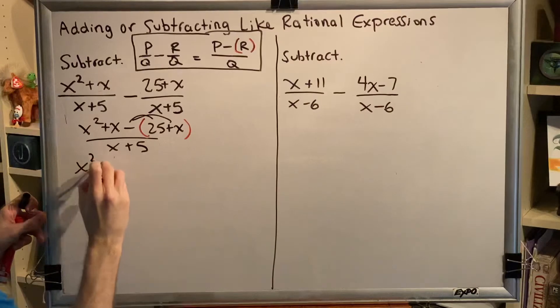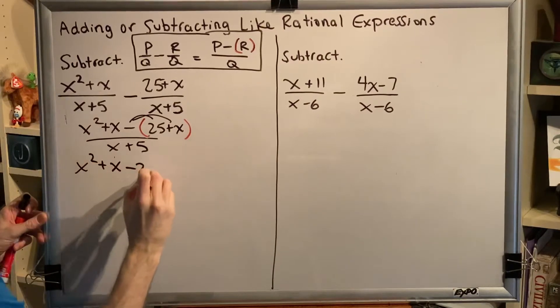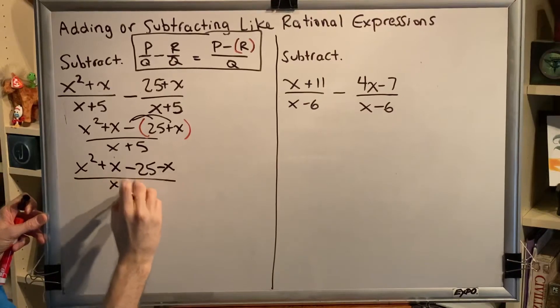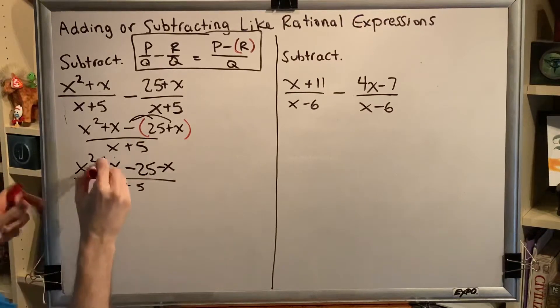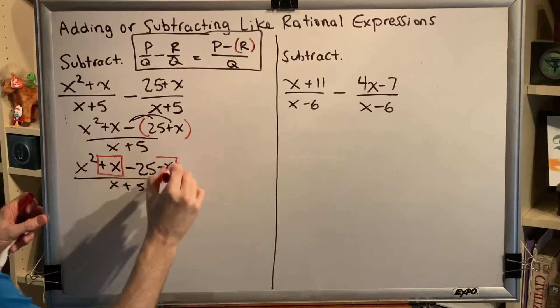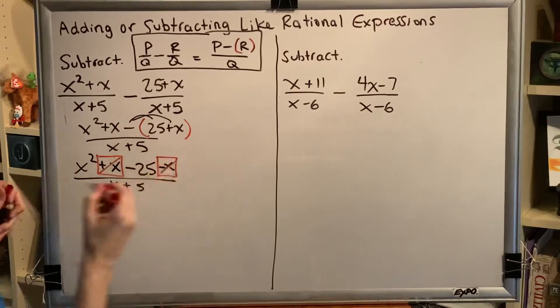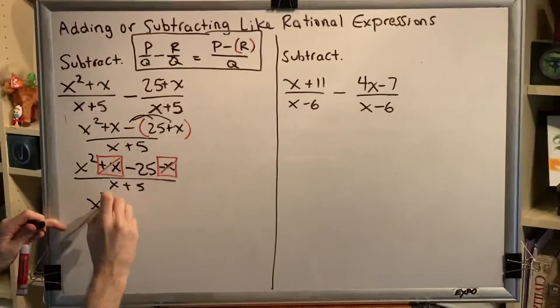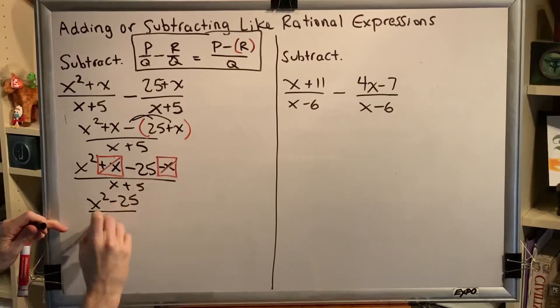So then we get x squared plus x minus 25 minus x over x plus 5. We notice that we can simplify because we have a plus x minus x. Opposites are going to cancel to 0. So then we have x squared minus 25 over x plus 5.